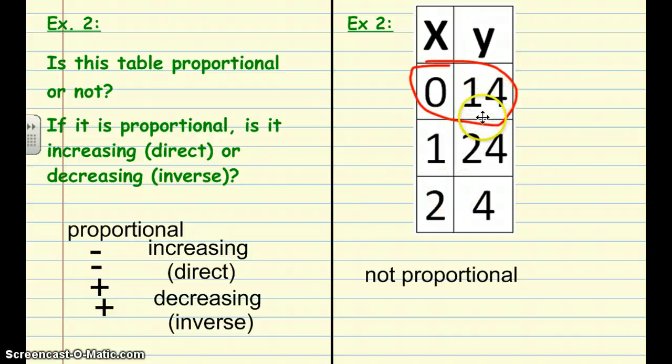And another thing that I notice going from 14 to 24 it's adding 10 and then going from 24 to 4 it's subtracting 20. So not only do we not have the origin but we also don't have a pattern here.